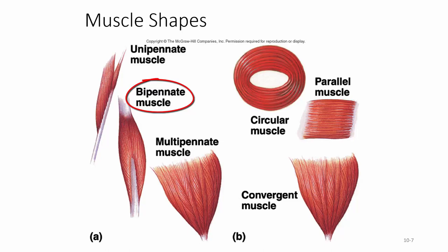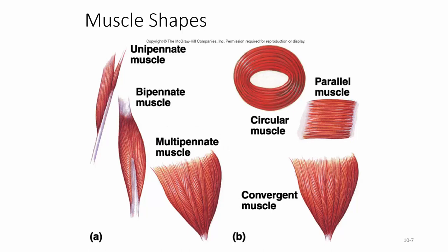A multipennate muscle has several tendons of origin and several tendons of insertion, with fibers passing obliquely from a tendon of origin to a tendon of insertion on each side. When those tendons converge down to one tendon, we consider that muscle a convergent muscle.